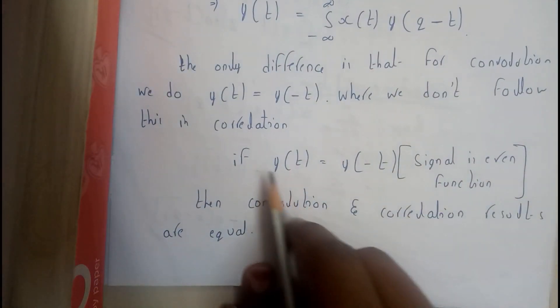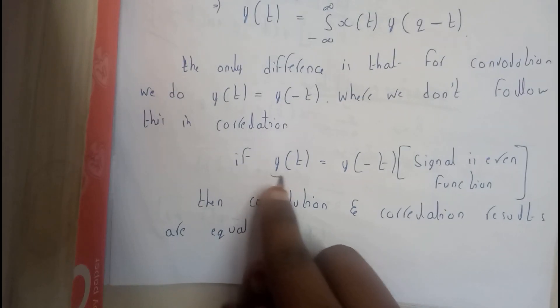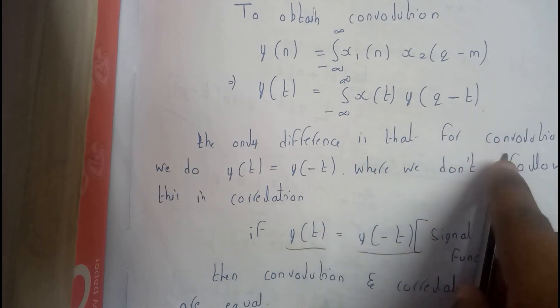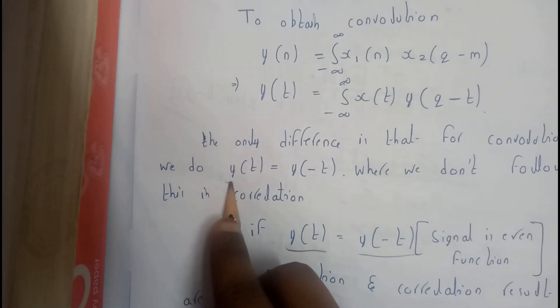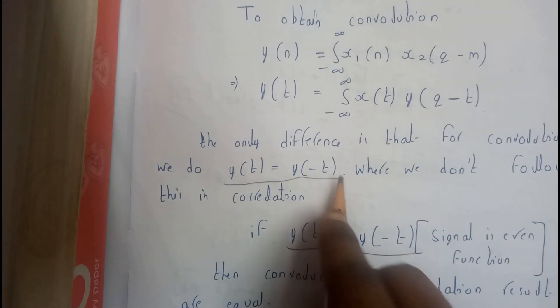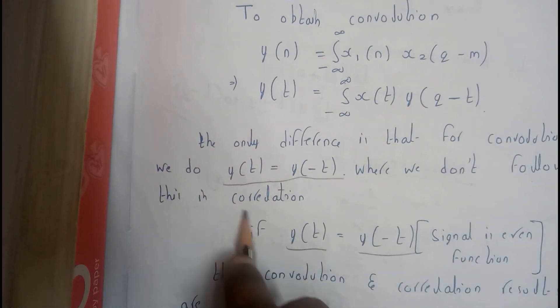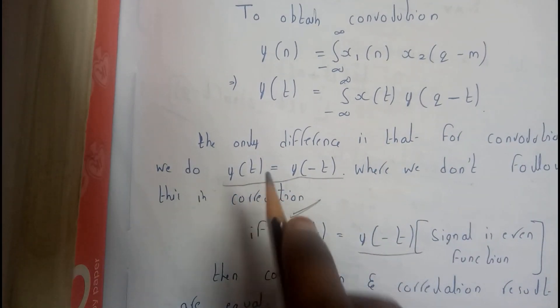So the only difference is we will be doing y of minus t. The only difference is that for convolution, we do y of t is equal to y of minus t where we don't follow this in correlation. That's the main difference.